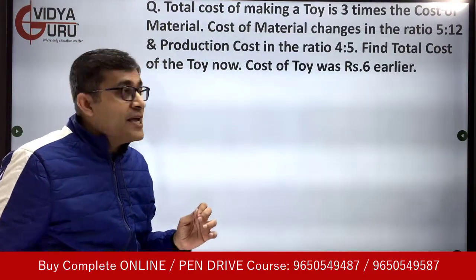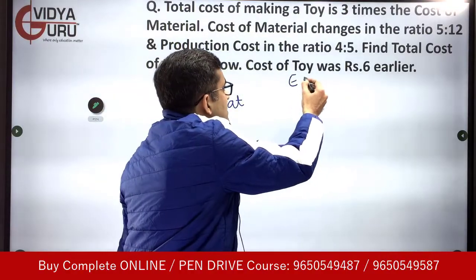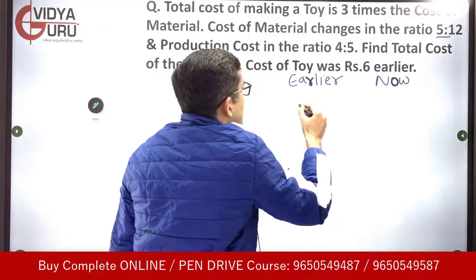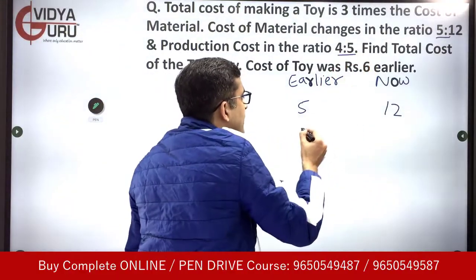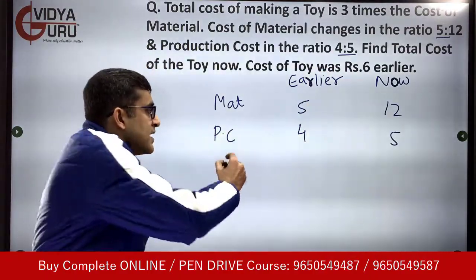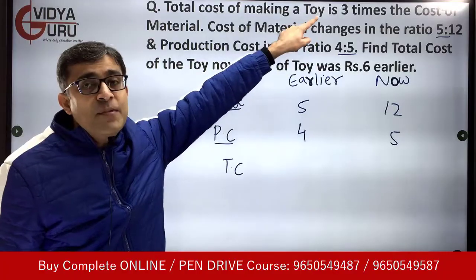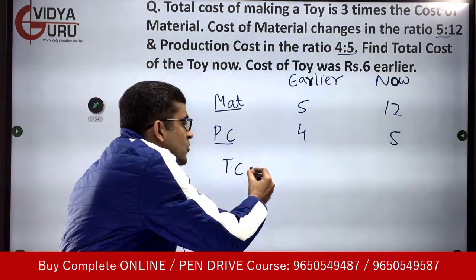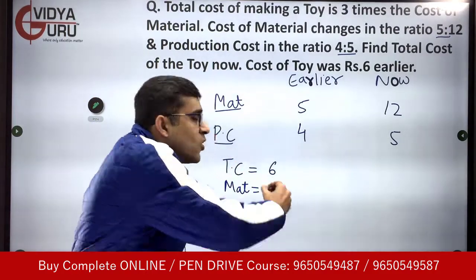The ratio of material cost is changing from earlier to now in the ratio 5 is to 12, and the production cost is changing in the ratio 4 is to 5. The total cost earlier was Rs. 6, and since the total cost is 3 times the cost of material, the material cost was one-third of 6, which means the cost of the material was Rs. 2 earlier.